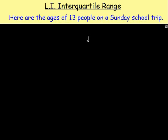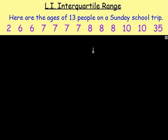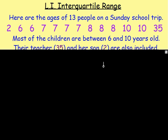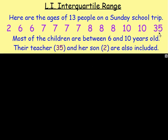Let's look at this example. Let's say there are 13 people on a school trip and here are their ages. Somebody is 2, somebody is 6, somebody else is 6, somebody is 7, another person is 7, and so on — right the way up to this ancient person who is 35 years old! Most of the children, as you can see, are between 6 and 10 years old. It is just the two people at either end — the teacher who is 35 and the child who is 2 — that are sticking out like a sore thumb.